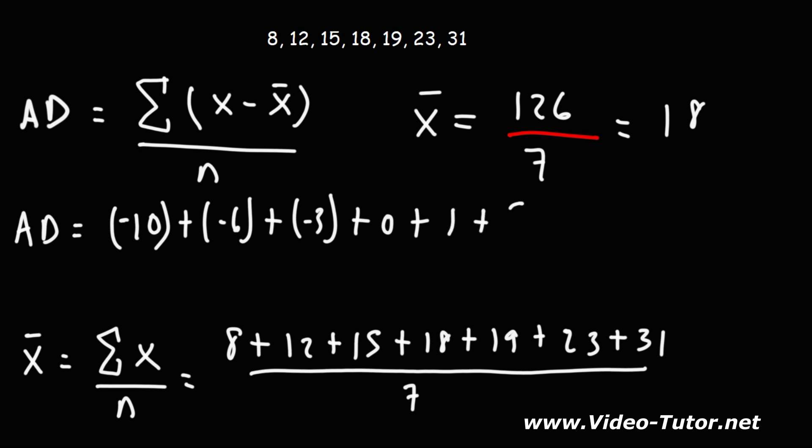23 minus 18 is 5. 31 minus 18, that's going to be 13. And we're going to divide that by 7.